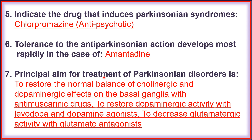Question seven: the principal aims for treatment of Parkinson's disorder are three: first, to restore the normal balance of cholinergic and dopaminergic effect on the basal ganglia with anti-muscarinic drugs; second, to restore dopaminergic activity with levodopa and dopamine agonists; and third, to decrease glutamatergic activity with glutamate antagonists.